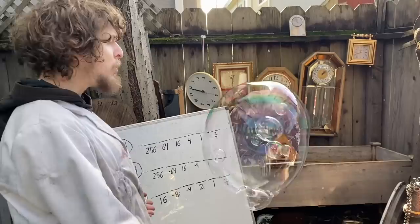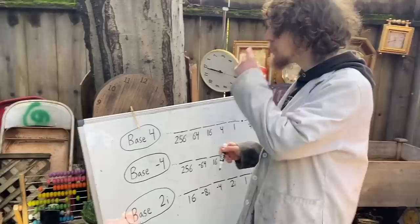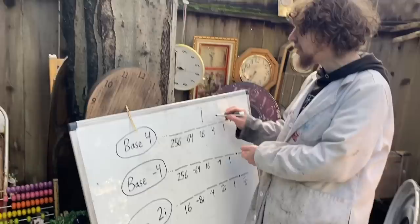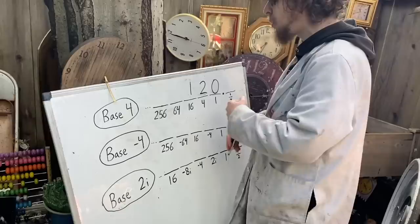If you were trying to write 2 dozen in base 4, the way we'd write 24 would be to take a 16, 2 of the 4s, and nothing else. 1, 2, 0 would represent 24 in base 4.